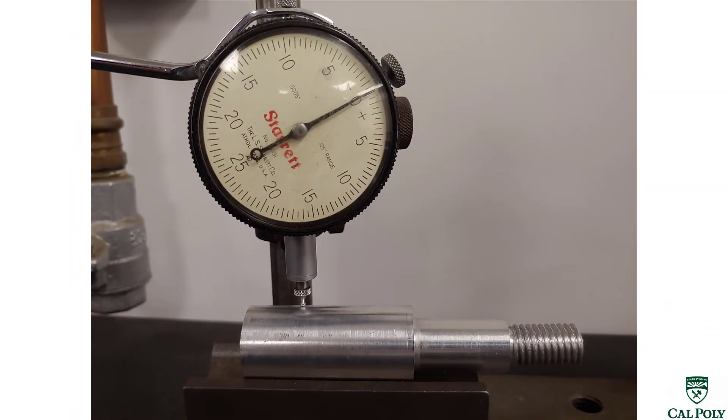Now we will measure the circularity of our lathe part. Circularity is the measurement of the roundness of a feature on a part.